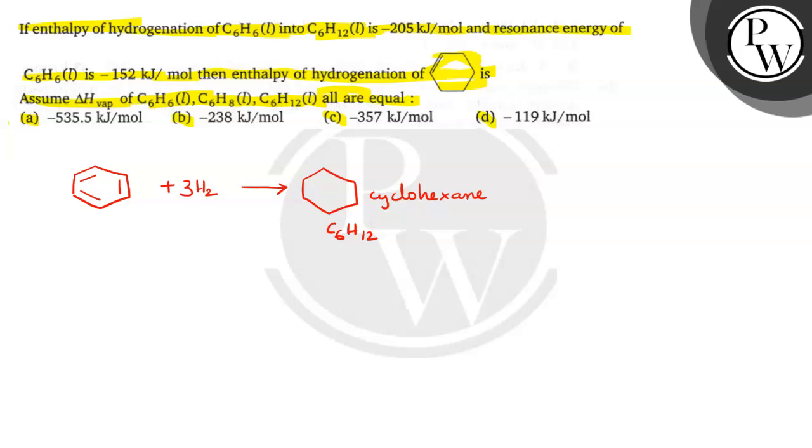If you see the formula, C6H6 after adding three moles, three twos are six hydrogens, it converts into C6H12. And here the delta H for hydrogenation is minus 205. The enthalpy of hydrogenation is minus 205. And resonance energy of this, resonance energy after the delocalization of these pi electrons, that is minus 152.